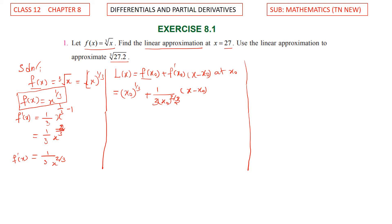Now for the linear approximation, we set x₀ equal to 27. Substituting x₀ equal to 27: 27 power 1 by 3, plus x minus x₀, with x₀ value 27, divided by 3 into 27 power 2 by 3. Since 27 power 1 by 3 equals 3, and 27 is 3 cubed.